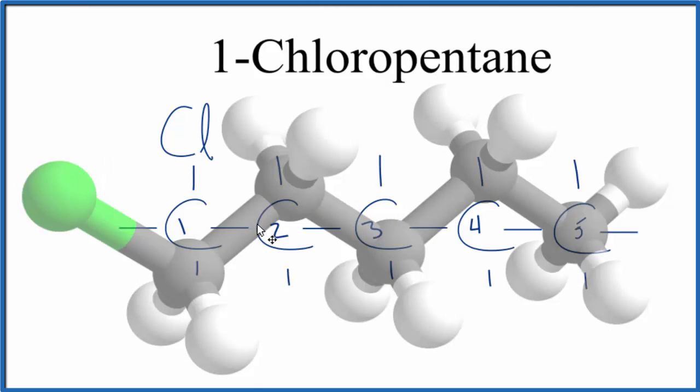So 1-chloropentane. The molecular formula for 1-chloropentane, that would be C5H11Cl. And we could get that just counting up all the carbons, hydrogens, and chlorine atom.